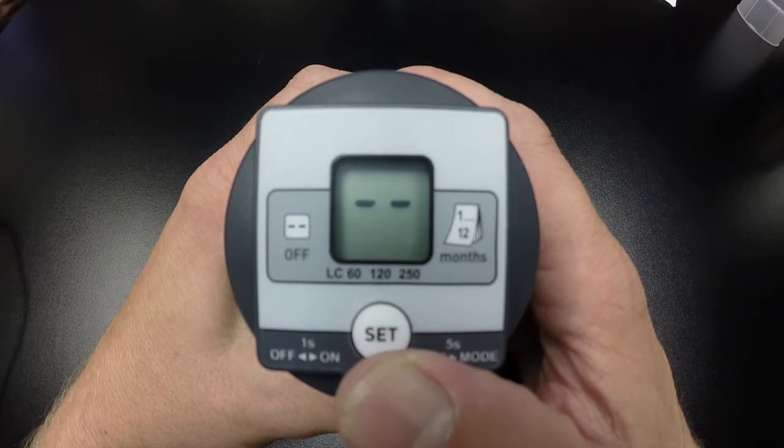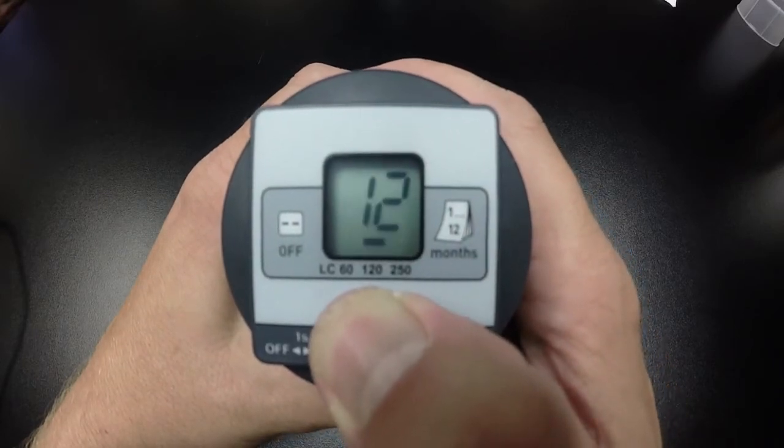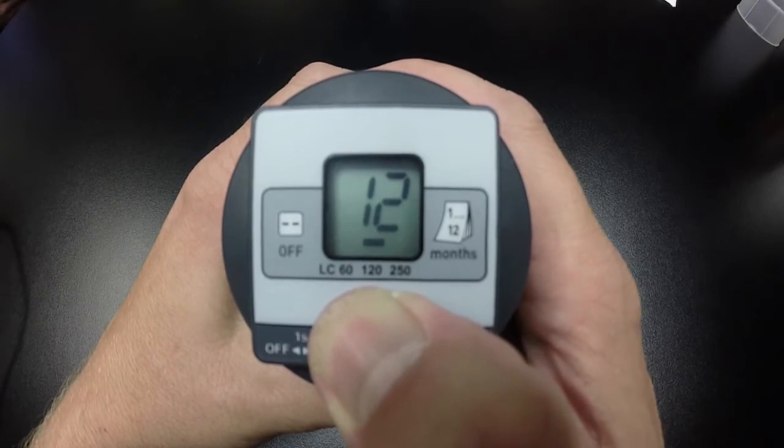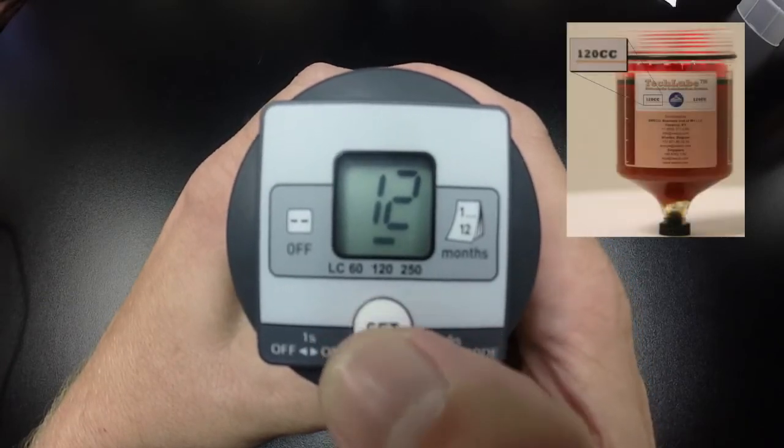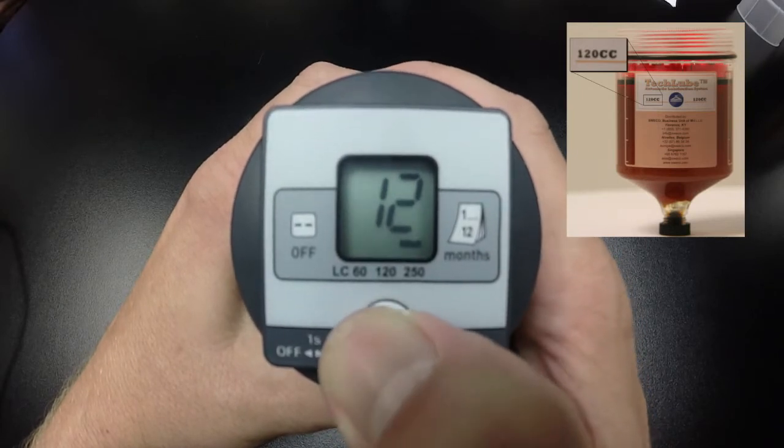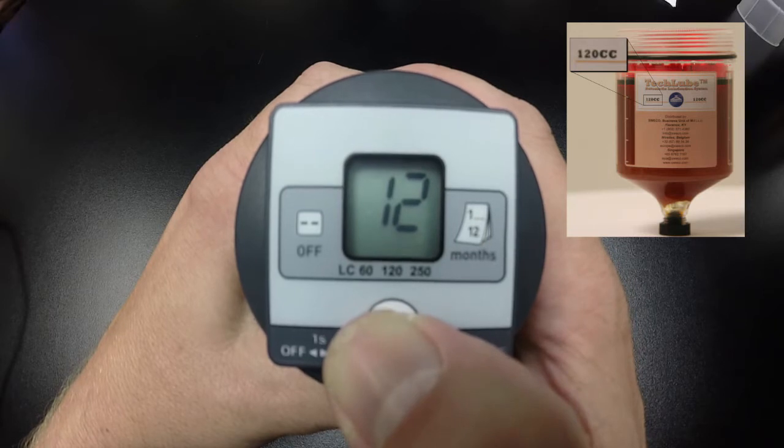To apply canister size settings, hold the set button for 5 seconds. Once the line starts blinking, press the set button until the line is above the desired lubrication canister size, 120 or 250, and then release the set button.